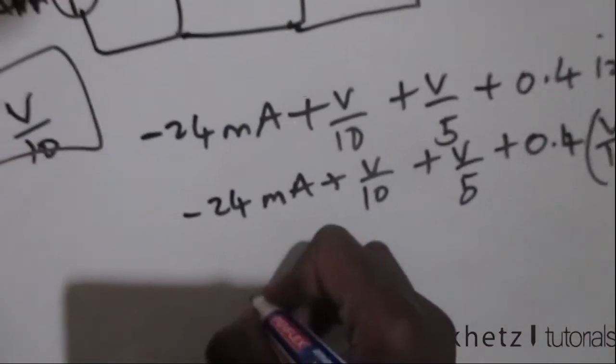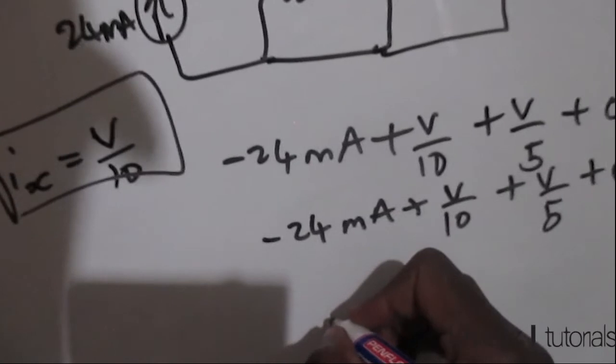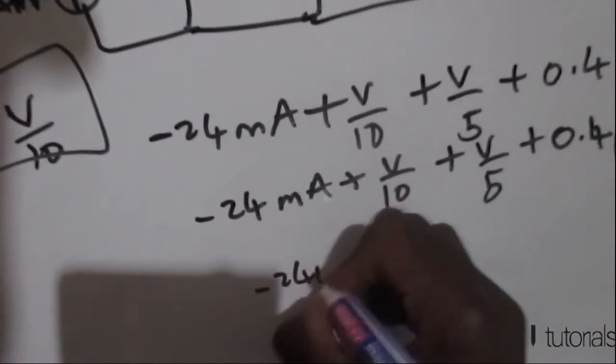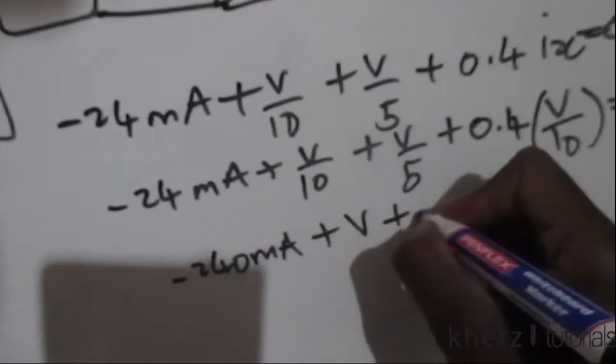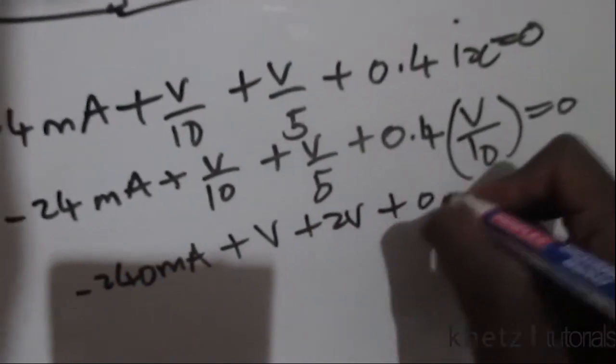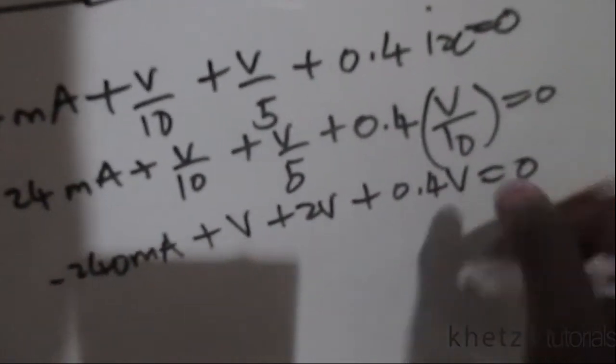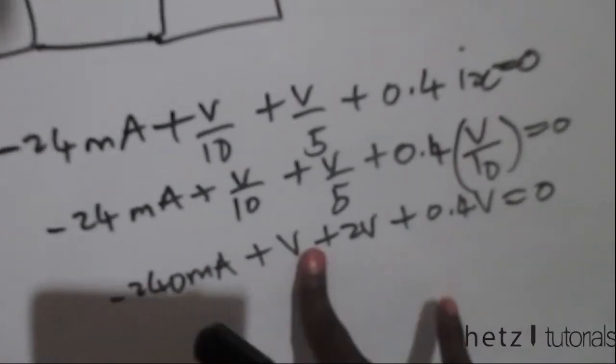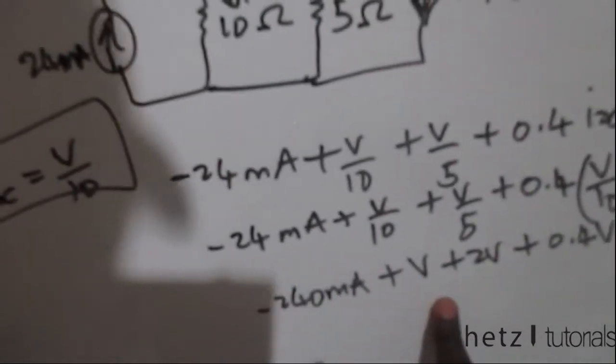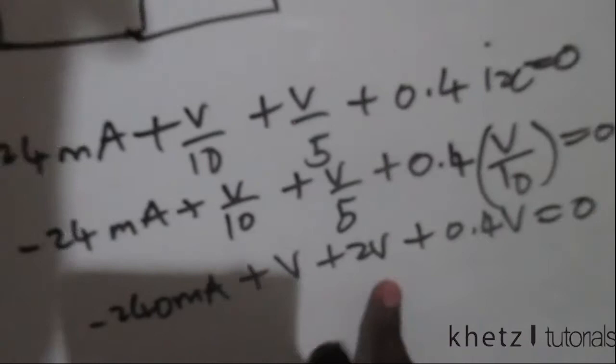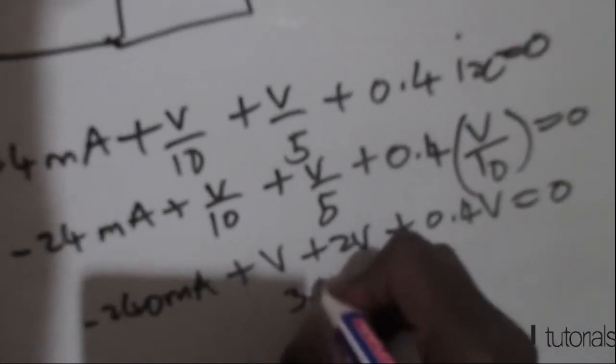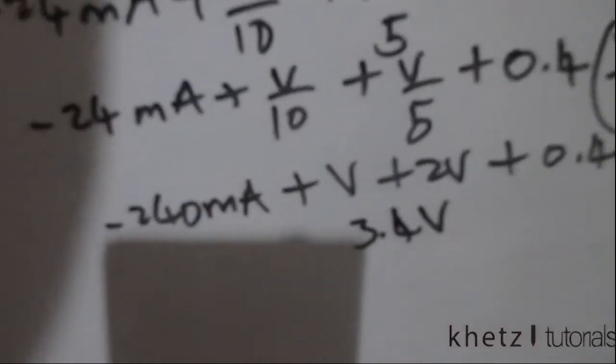So multiplying everything by 10, then we are basically going to have -240mA + v + 2v + 0.4v = 0. Now adding the common terms up, we are actually going to have 3.4v. So 3.4v = 240 milliamperes.